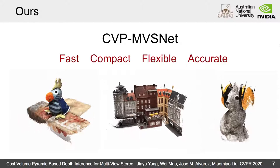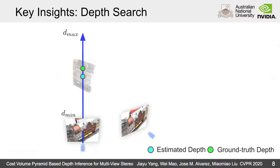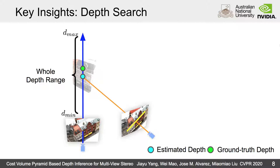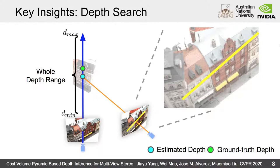Given a coarse depth estimation, it is not necessary to search the whole depth range since the ground-truth depth usually located around the coarse depth estimation. Inspired by works on optical flow estimation, the depth search range that may cover ground-truth depth can be determined by a certain pixel distance along the epipolar line on source views.